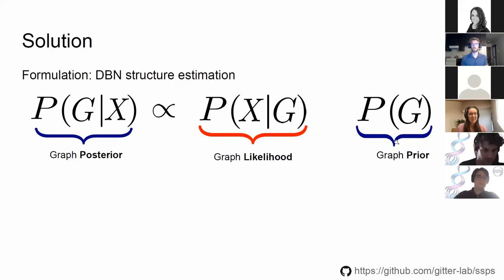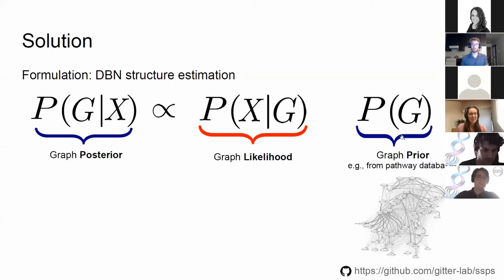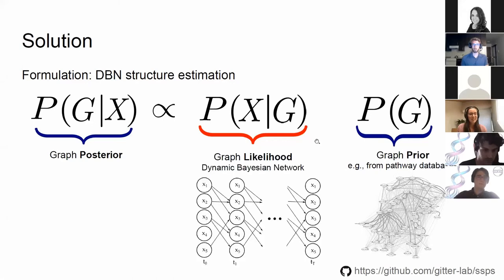We decompose this posterior into a graph likelihood function and a graph prior distribution. We accept prior knowledge in the form of a weighted directed graph where the weight of an edge indicates our prior confidence that edge exists — this can be derived from pathway databases such as KEGG or REACTOME. The graph likelihood function is a dynamic Bayesian network (DBN): a sequential probabilistic model where one variable in one time step is a noisy function of its parents in the preceding time step, and the dependencies are governed by the graph structure G.